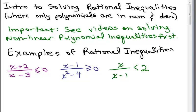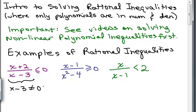Solving these is very similar to solving the nonlinear polynomial inequalities, except with these fractions we have to pay a little bit more attention. For instance, you can never have the denominator equal to 0. So if you look at the denominator, which is x minus 3, x minus 3 can never be 0, because then that fraction would be undefined. So what you can determine right away are the values that x cannot be.